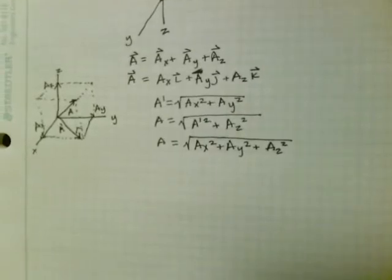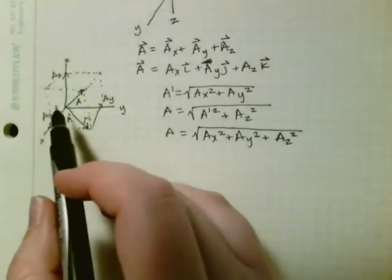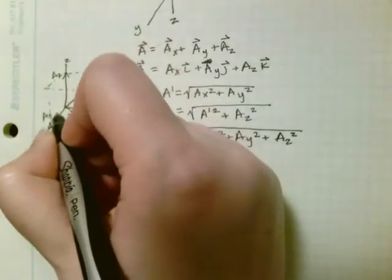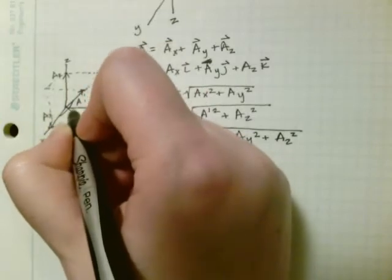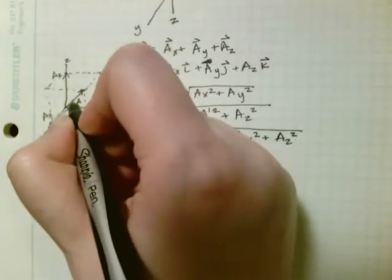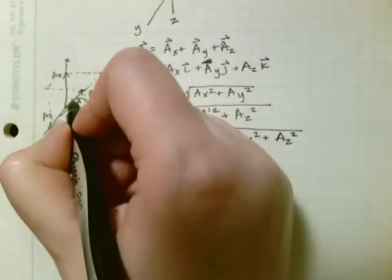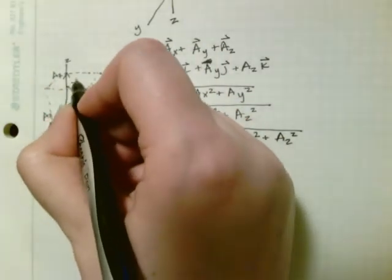So now, a can also be expressed with respect to three angles. The angle from a to the x axis, which is considered alpha. A to the y axis, which is considered beta. And a to the z axis, which is considered gamma.